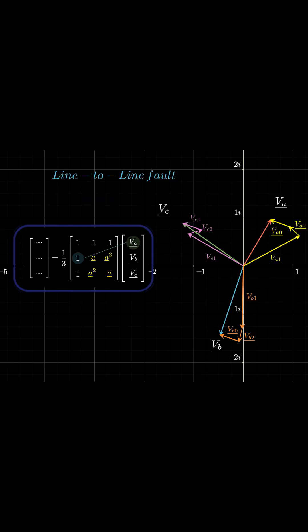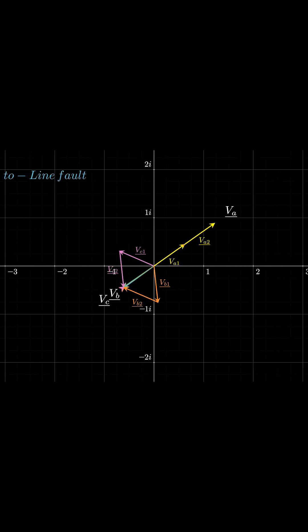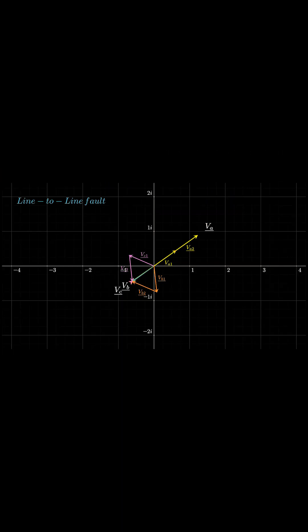In this case, the phase voltages B and C are essentially the same, assuming the fault impedance is low, and phase A remains mostly unchanged.